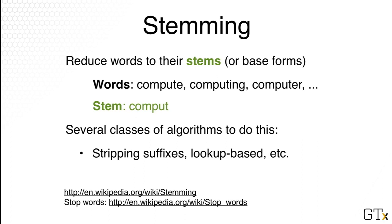Stemming means reducing words to their stems or base forms. An example would be the words compute, computer, and computing — all of them relate to computing in general. The stem of all these words would be C-U-M-P-U-T, so it removes the E, the I-N-G, the E-R, and so on. There are a number of algorithms that can do this already, such as stripping suffixes or doing something called a table lookup — essentially having a gigantic table where the entries could be compute, computing, computer, and the value would be C-U-M-P-U-T. Whenever you see a word like compute or computing, you can automatically look up the stem.